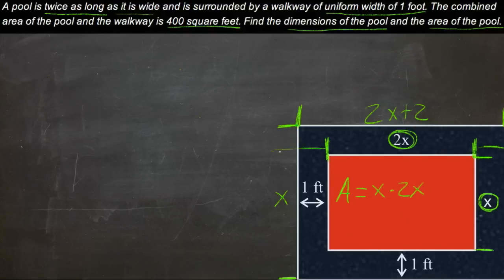So the area that we know is 2x plus 2 times x plus 2, because we've got our plus 1 here, one width here, and one width here, one foot width. So the length and the width we know is 2x plus 2 times x plus 2, and the length and the width we want is x times 2x.